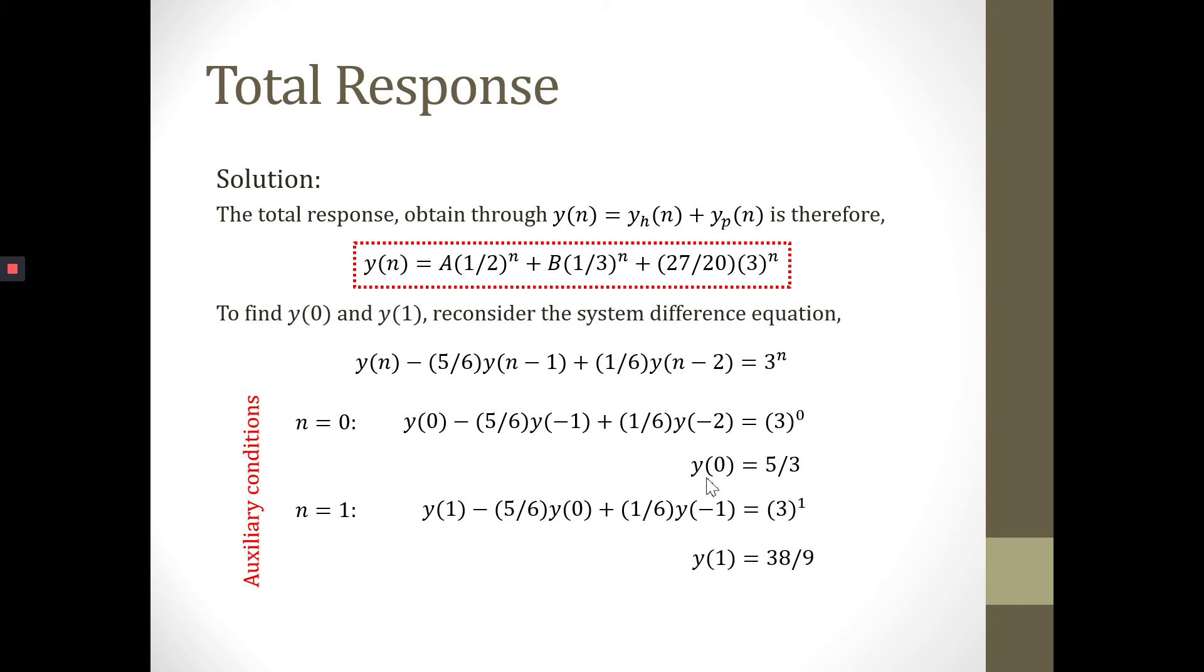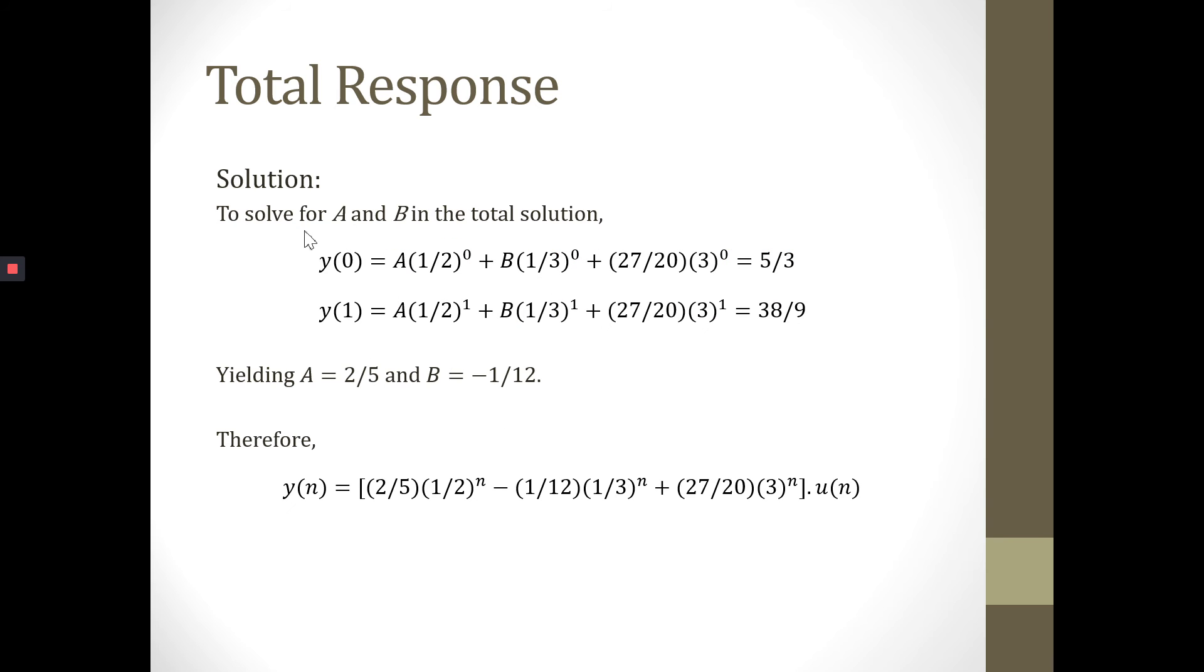Based on the auxiliary conditions we just determined—Y(0) equals 5/3 and Y(1) equals 38/9—together with the total response equation, we can use them together to determine A and B. For Y(0), N equals 0, we use the total response previously, which equals 5/3. The next equation we construct based on Y(1), N equals 1, which equals 38/9. Then we use these equations to solve: A equals 2/5 and B equals -1/12, using simultaneous equations.